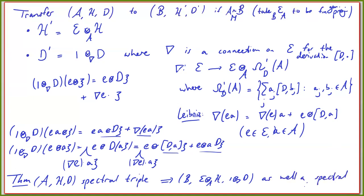The final result one can show is that if (A, H, D) is a spectral triple, then so is (B, H', D') where H' = E ⊗_A H and D' = 1 ⊗_∇ D. Additional structure like gradings and real structures can all be included in this transfer.